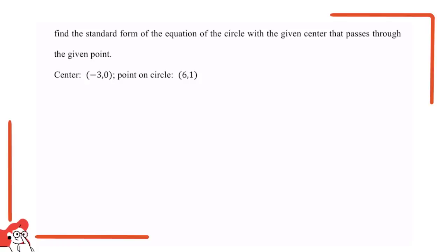Here is the question: Find the standard form of the equation of a circle with the given center that passes through the given point. The center is (-3, 0) and the point on the circle is (6, 1).